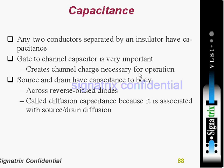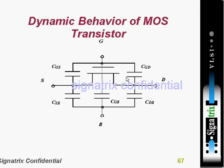The gate to channel capacitance creates a channel charge necessary for the operation. The channel forms here. Think of gate to channel capacitance as two plates of a capacitor — when you apply a positive charge here, an equal negative charge comes here, and that is how the channel forms.